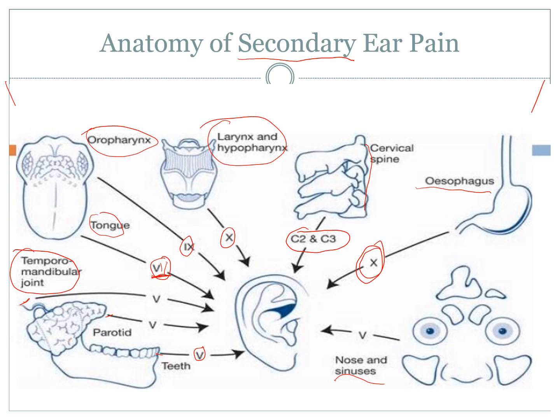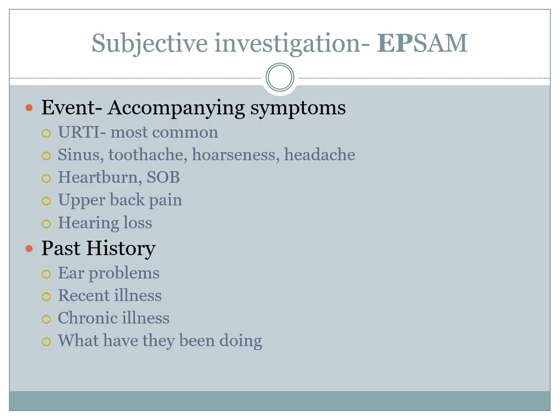Moving on to subjective investigations, we look at the event. The main thing is to try to pinpoint whether it's a primary or secondary cause, and that is best done by looking at accompanying symptoms. The most common accompanying symptom for primary causes is upper respiratory tract infections — sinusitis, pharyngitis, rhinitis — which cause inflammation around the eustachian tubes, spreading to the ear. A red flag is when a person has difficulty or pain on swallowing, difficulty speaking, or is coughing up blood.